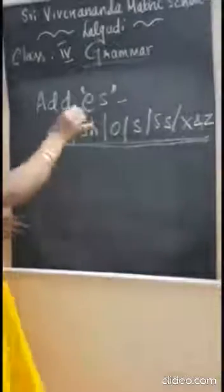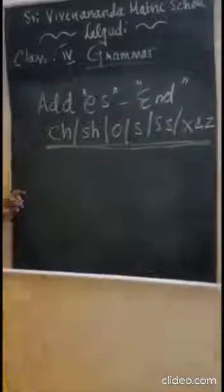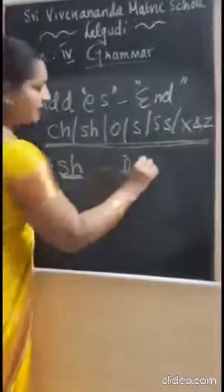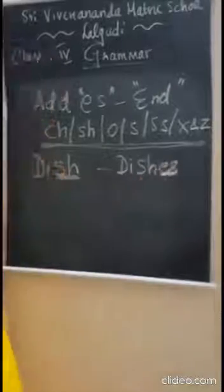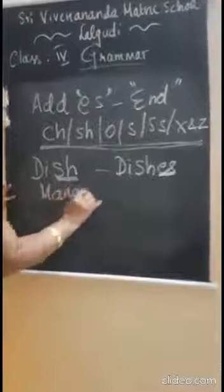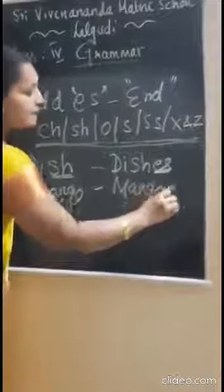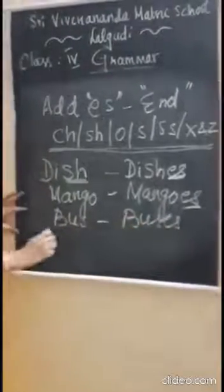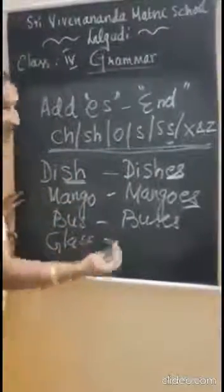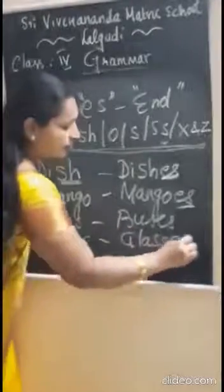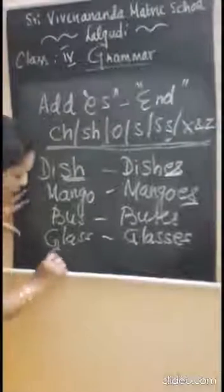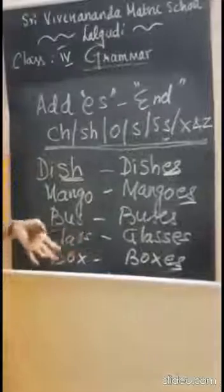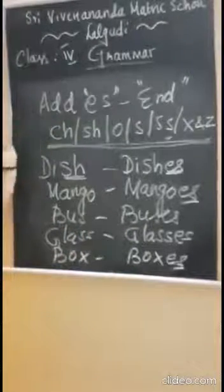Then just add ES at the end of the word. For example, dish — ending with SH — just add ES, so it becomes dishes. Mango becomes mangoes. Bus becomes buses. Glass becomes glasses. Box becomes boxes. Very, very simple — the easiest grammar is noun, you just have to add S or ES.